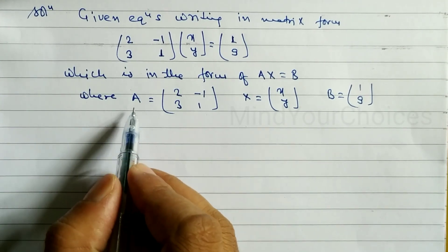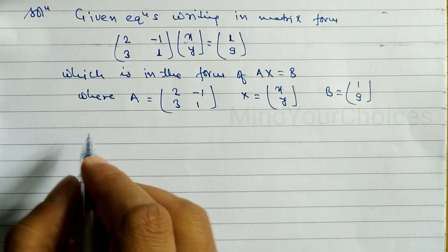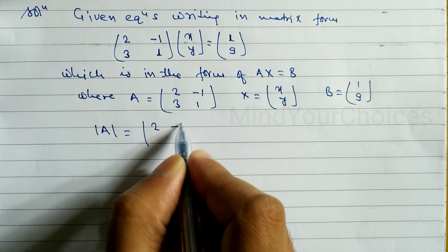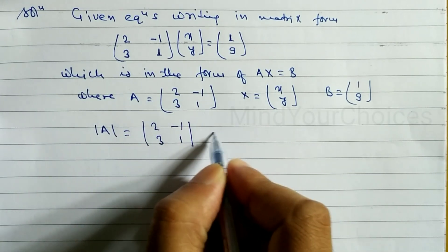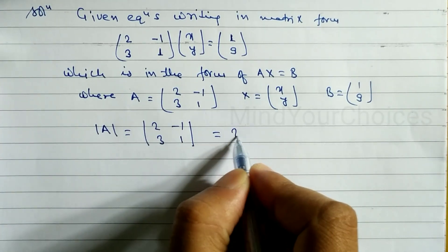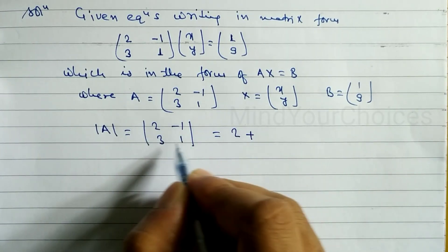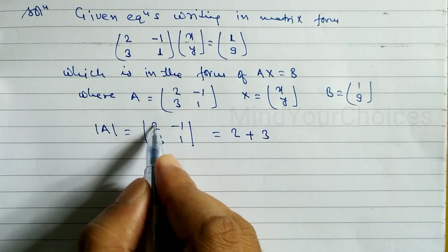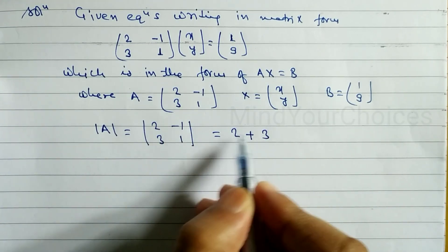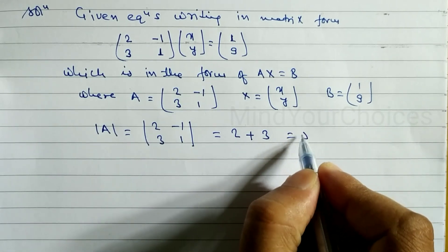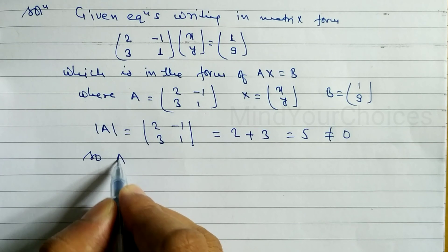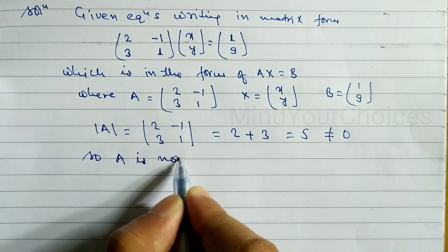We have to check whether this is a singular matrix or non-singular matrix. The determinant of A equals [2, -1; 3, 1]. We multiply the main diagonal: 2 into 1 is 2, minus the other diagonal: minus 3 into minus 1 gives plus 3. So the determinant equals 5, which is not equal to 0.